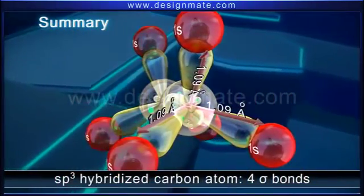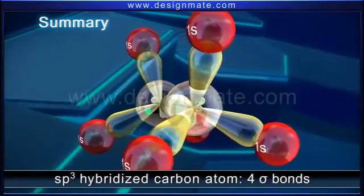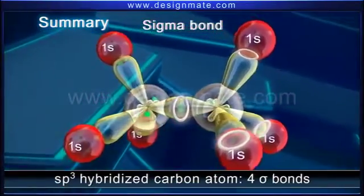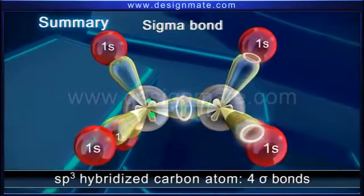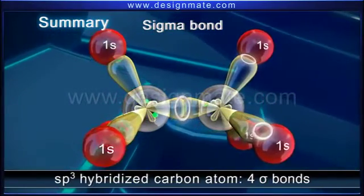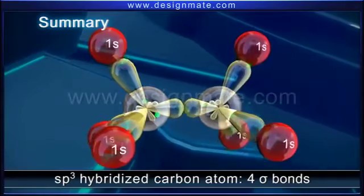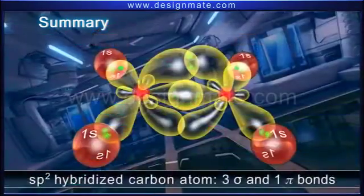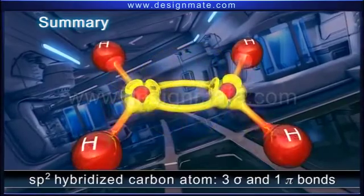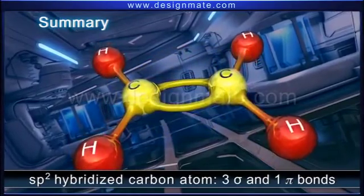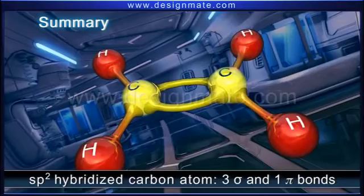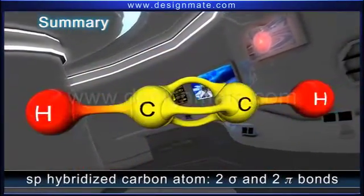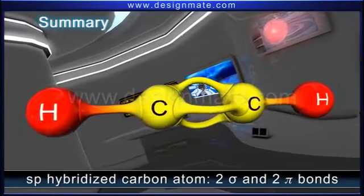To summarize: whenever a carbon atom forms four sigma bonds directed along the corners of a regular tetrahedron, it is sp3 hybridized. A carbon atom that forms three sigma bonds and one pi bond is sp2 hybridized, while one that forms two sigma bonds and two pi bonds is sp hybridized.